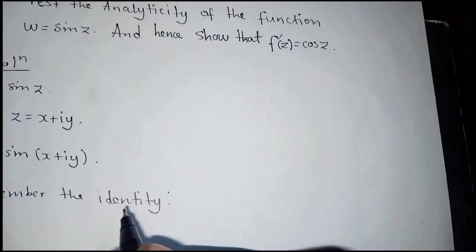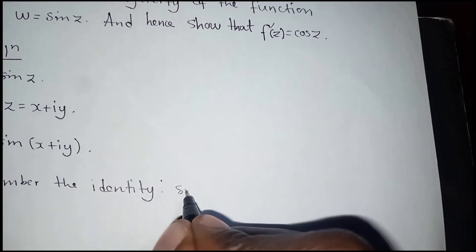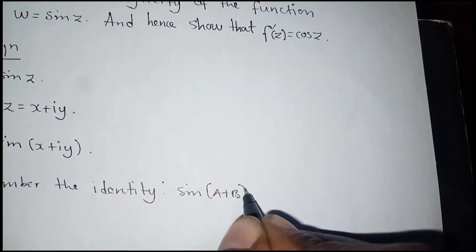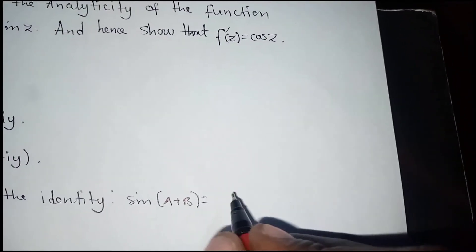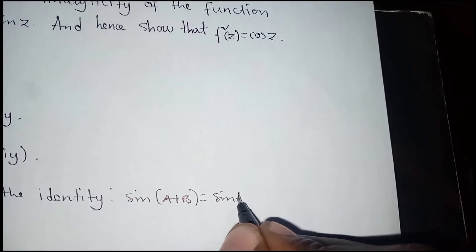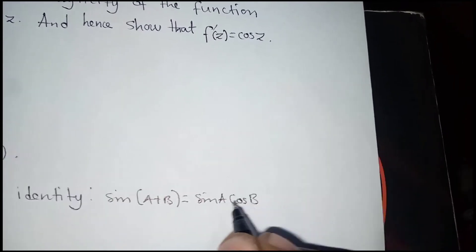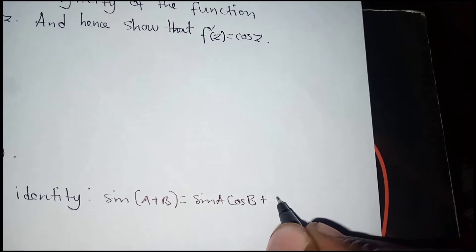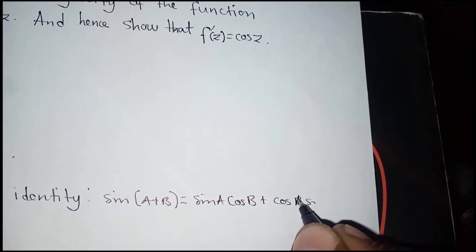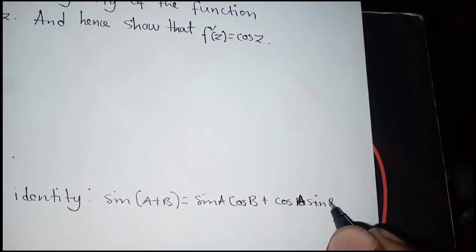You need to remember the identity for sine of (a + b). This identity equals sine of a times cos of b, plus cos of a multiplied with sine of b.